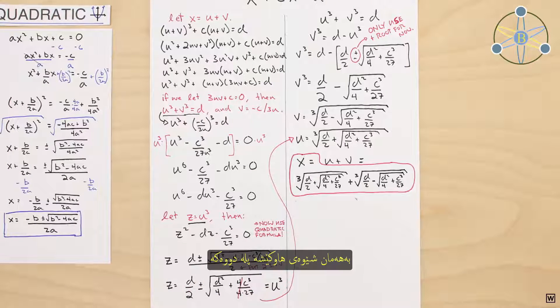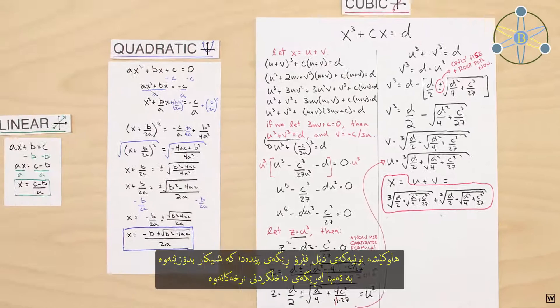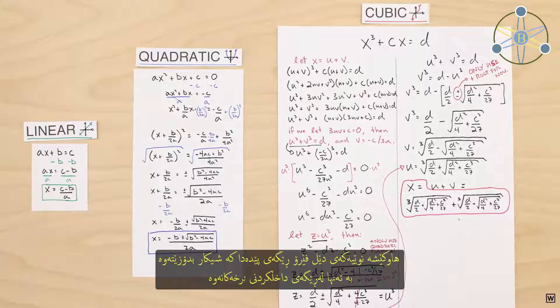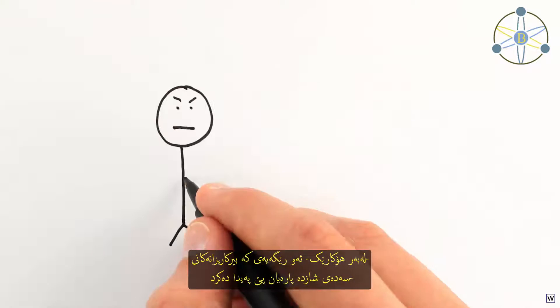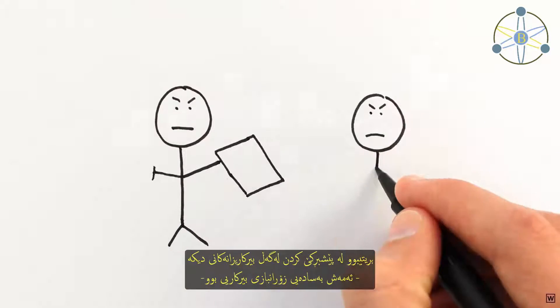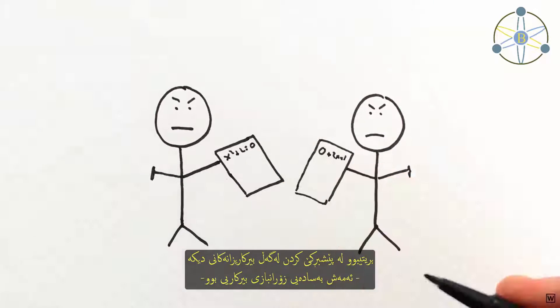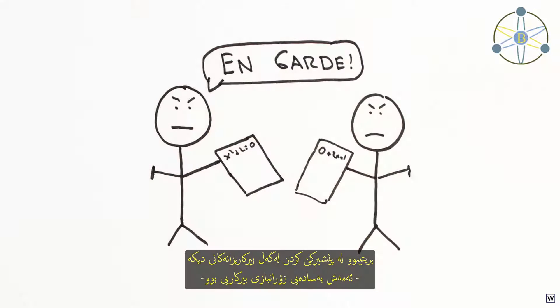Just like the quadratic formula, Delferro's new formula allowed him to find the solution to cubic equations by simply plugging in values. Now, for some reason, the way mathematicians earned money in the 16th century was through challenging other mathematicians to what were basically math duels. So Delferro kept his new formula a secret to use in his next duel.